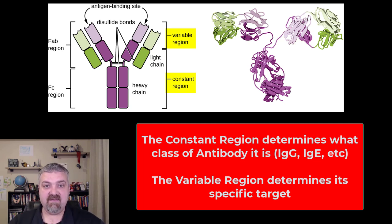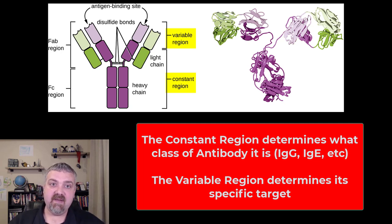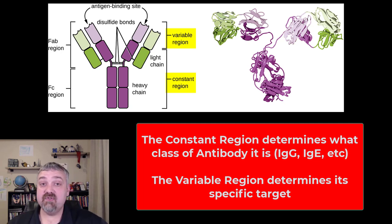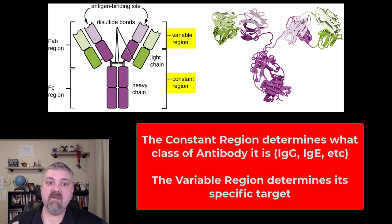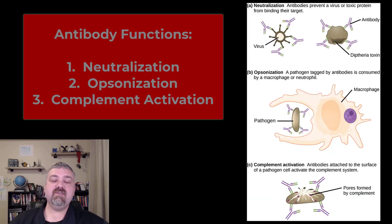So the constant region with the heavy chains is going to determine what type of antibody you are. Specifically what your target is is going to be those variable regions — the parts that change.